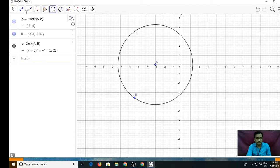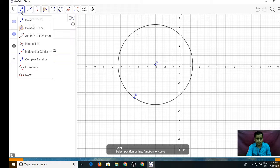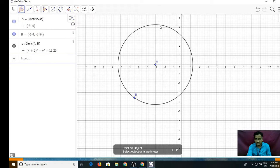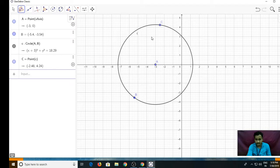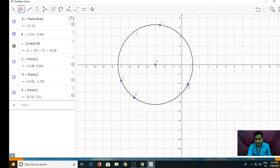Now on this circle, we have to plot three more points. For that, you need to choose point option, that is point on object. We can plot first point, then second point, and then third point, say point C, D, A respectively.